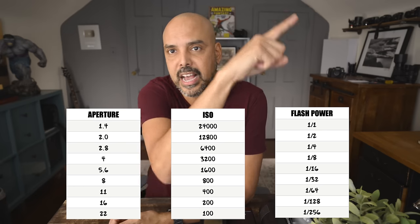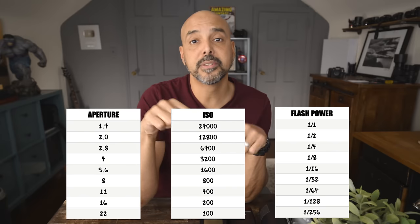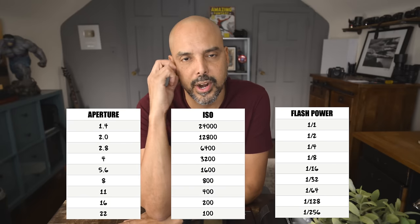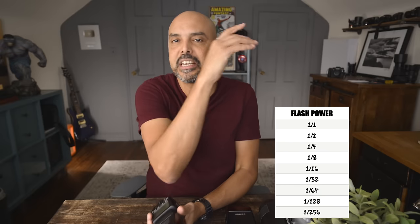Now I've talked about stops on this channel many times. Your flash goes from full power to half, to quarter, to eighth, to sixteenth — it keeps lowering. By the way, some flashes have powers numbered like 10, 9, 8, 7 — it's the same thing. 10 to 9 is one whole stop; 9 to 8 is another stop.